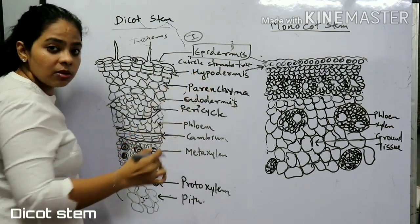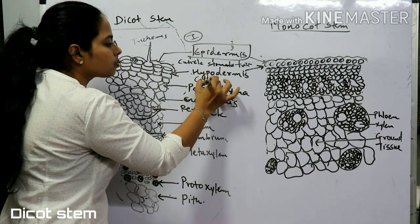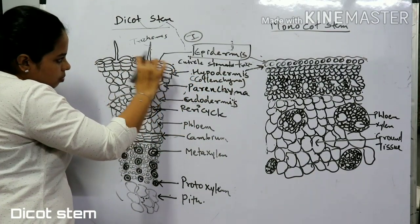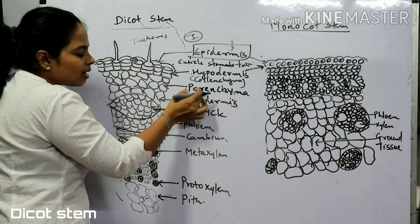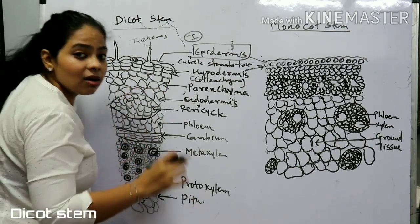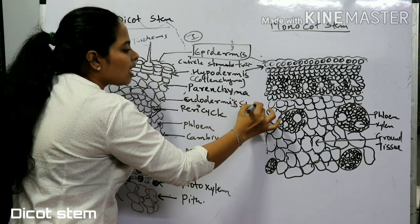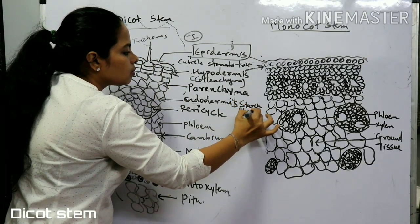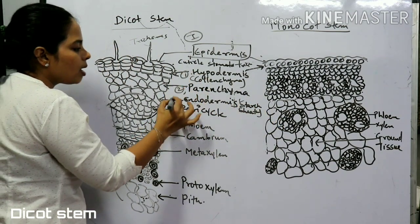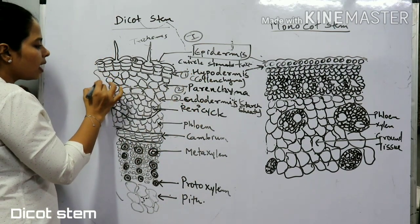Next, the hypodermis in the dicot stem is made up of collenchyma — you can see those layers here. After that, you have parenchymatous layers, and then the endodermis, which is made up of a single layer containing starch granules, so it is also known as the starch sheath. These three layers — hypodermis, parenchyma, and endodermis — are together known as the cortex.